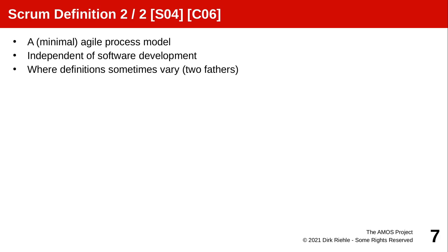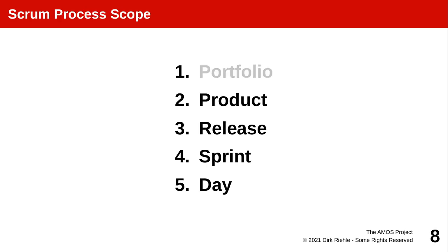The original definition did not actually have anything to do with software development, though software is where Scrum was really successful — so much so that the most recent definition, as laid out in the 2020 Scrum Guide, focuses on software development. The two founders originally differed but have since come together and harmonized.